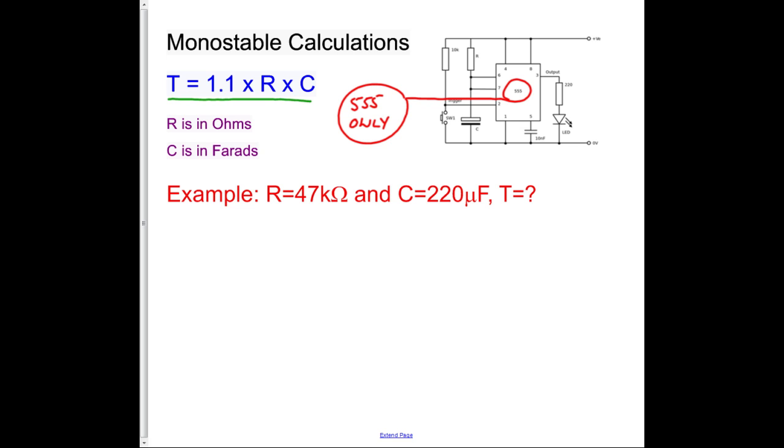So our first example, we're asked to use a 47 kiloohm resistor and a 220 microfarad capacitor and find out what the value of T is. So a couple of notes to start with.